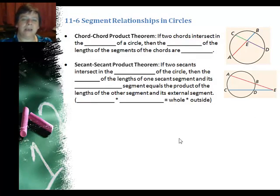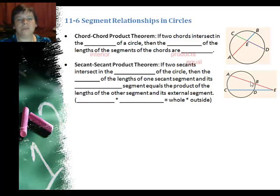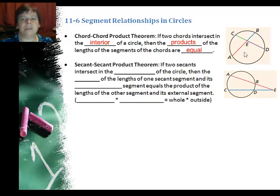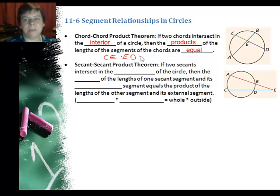Now our last set of theorems is the chord-chord product theorem and the secant-secant product theorem, so you can see the chords right here intersecting. If two chords intersect in the interior, notice how it's inside right here, the E, then the products of the lengths of the segments of the chords are equal. So one way I could write it for this problem is I could say the length of CE times, and I've got to stay on the same chord, ED equals AE times B.